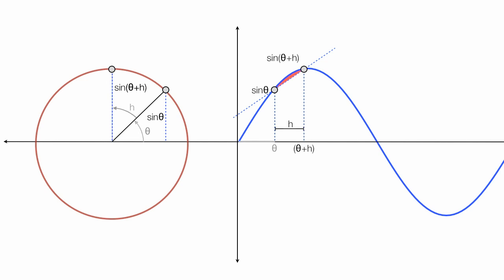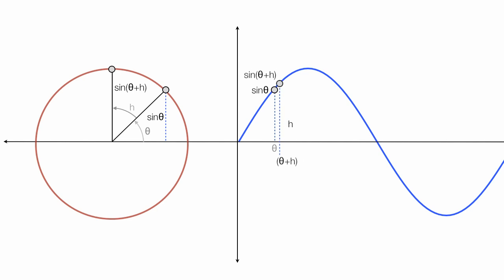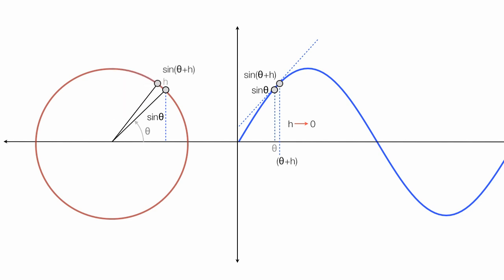If I draw a line through both those points, it's almost the same as the slope of this curved part of the sine wave. Now, if I let these points get closer and closer together by letting h approach 0, I'll do the same thing on the circle on the left — I'll let h get really, really close to 0, so that line rotates around like that. The height of that line is still sine theta plus h, and the slope of that tangent line is going to be cosine theta.